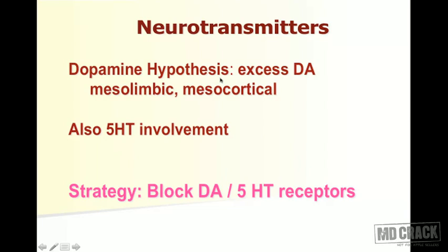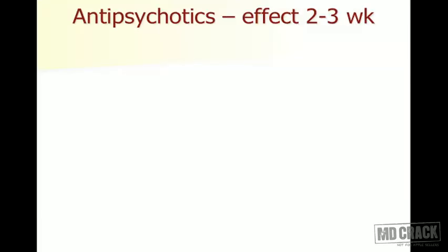The dopamine hypothesis proposed that excess dopamine in the mesolimbic and mesocortical systems causes schizophrenia symptoms. Later, it was proven that 5-hydroxytryptamine is also importantly involved. Since there is excess of amines — dopamine or 5-HT — management requires blocking amine transmission: blocking dopaminergic receptors or serotonin (5-HT) receptors. Early research focused on dopamine, so traditional antipsychotics were mainly dopaminergic blocking agents.